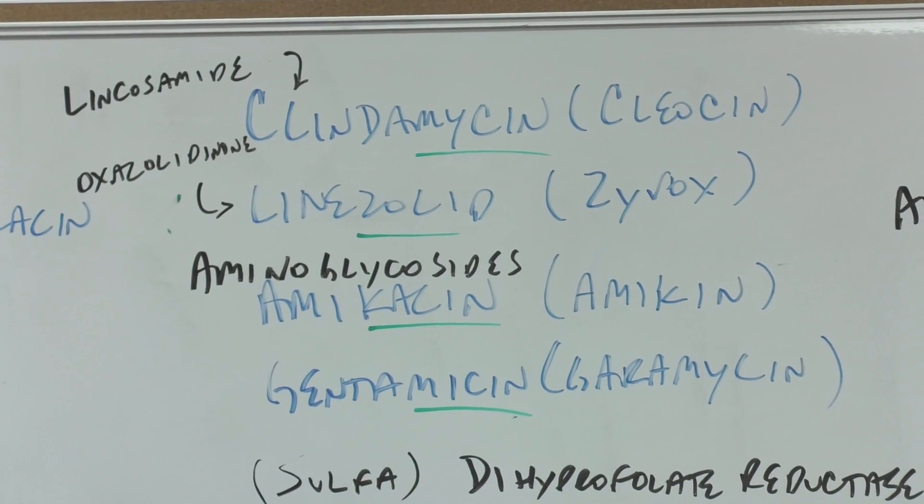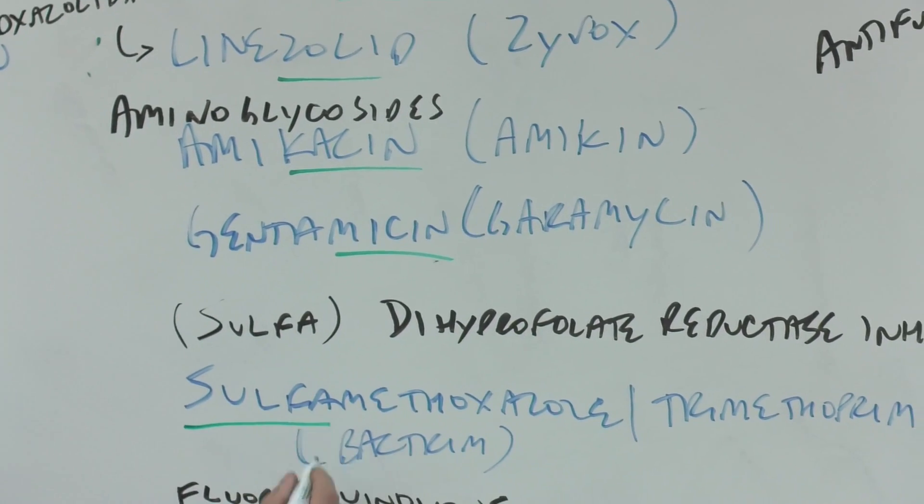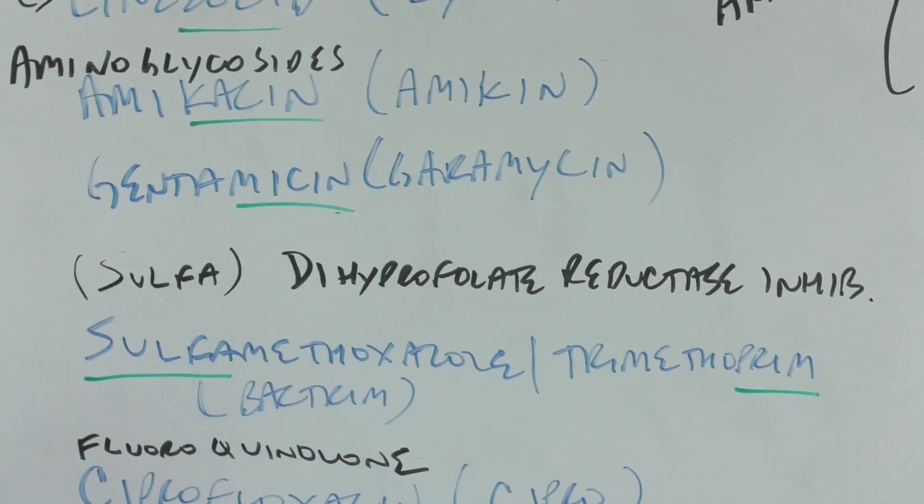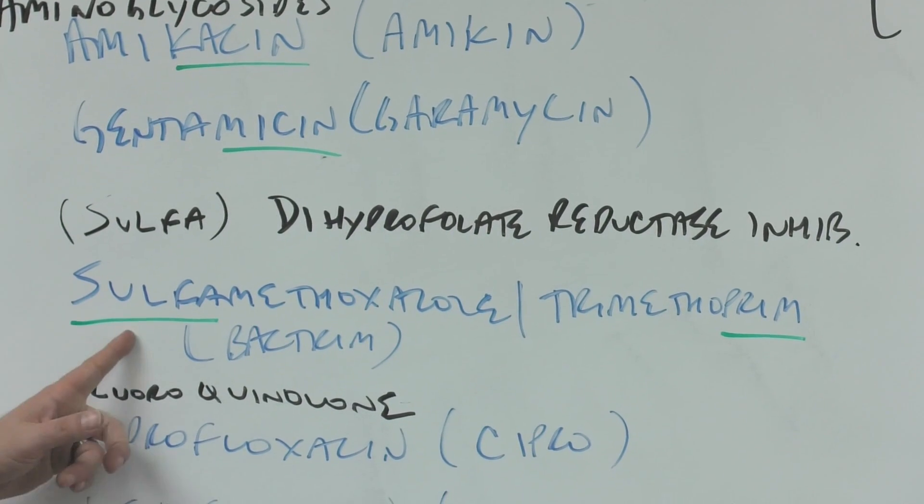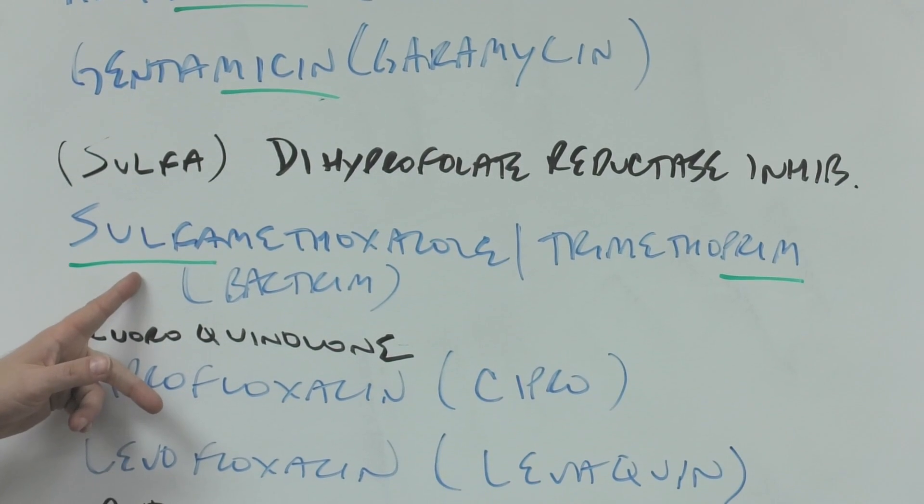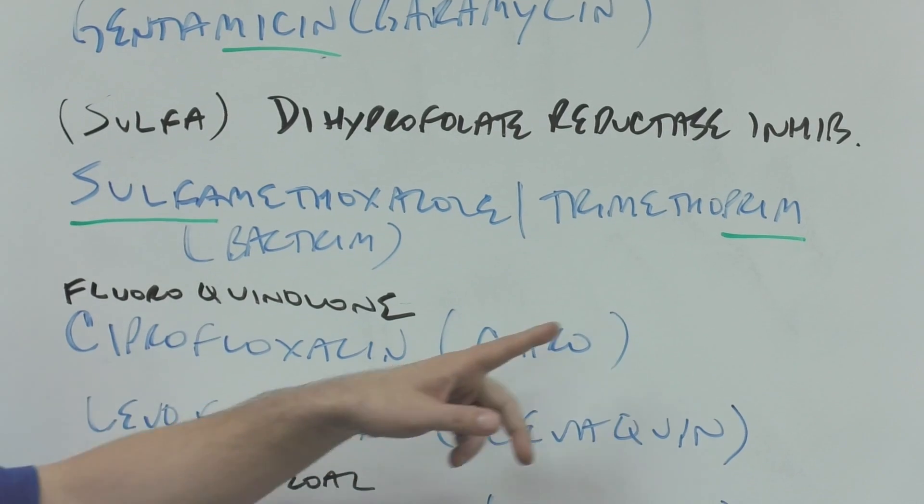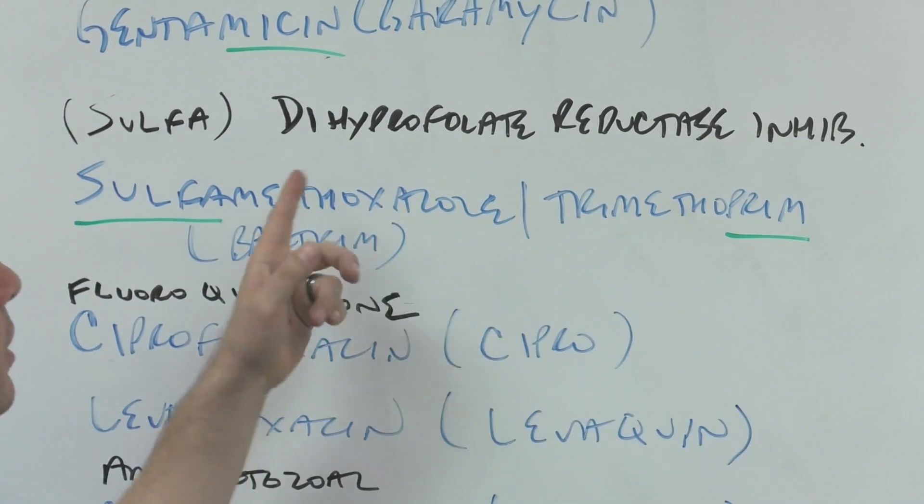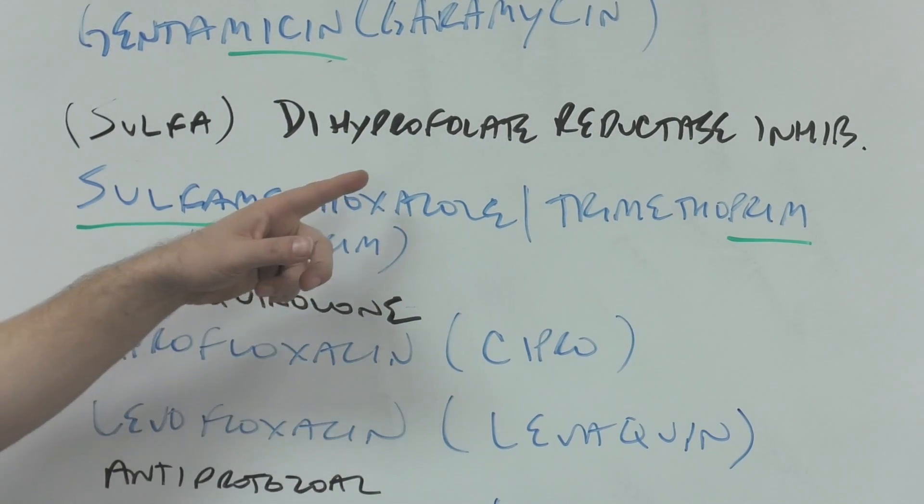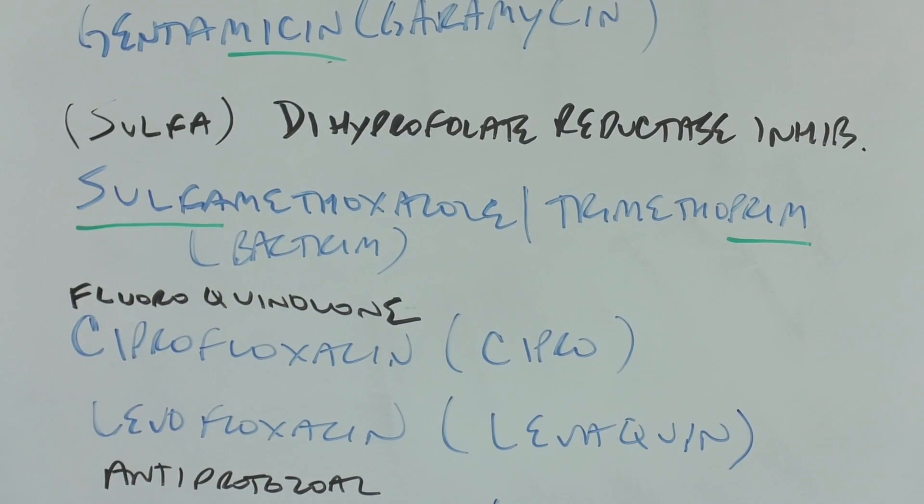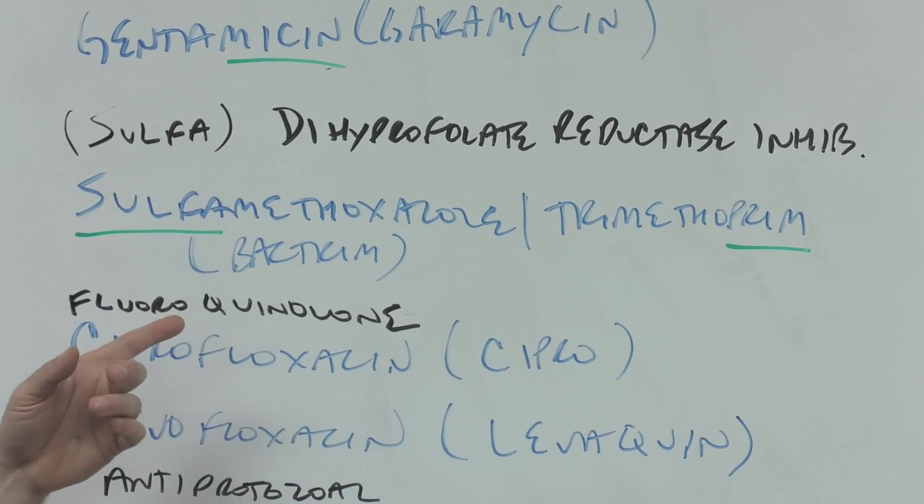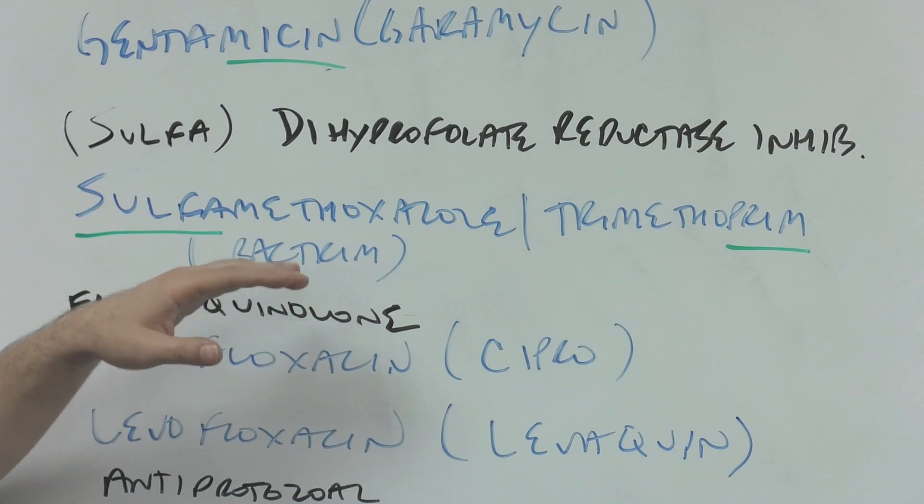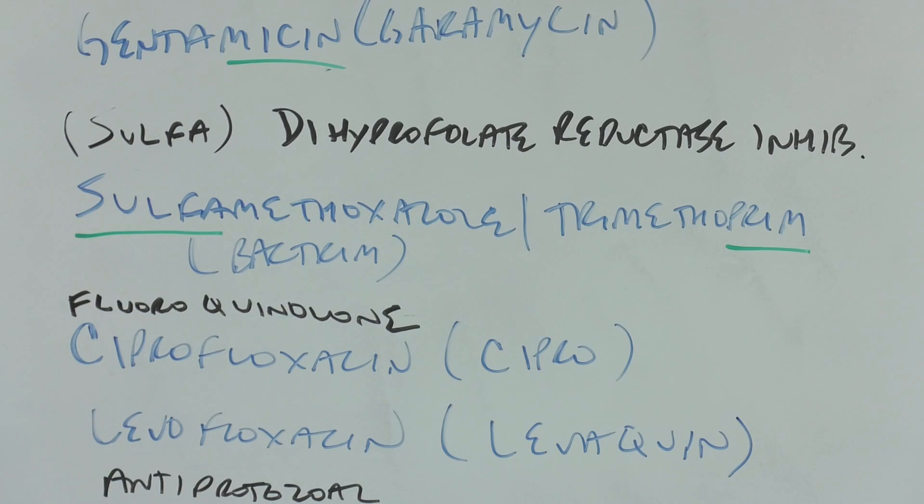The two dihydrofolate reductase inhibitors: sulfa and prim are both prefixes. Sulfa lets you know it's a sulfa medication, and trimethoprim—the prim lets you know it's a dihydrofolate reductase inhibitor. What does that mean? Bacteria need folic acid just like we do, but they have to make their own. If you block them from making their own, it would kill the bacteria or hurt the bacteria. If you take a couple letters out of the word bacterium, you get Bactrim, the brand name.